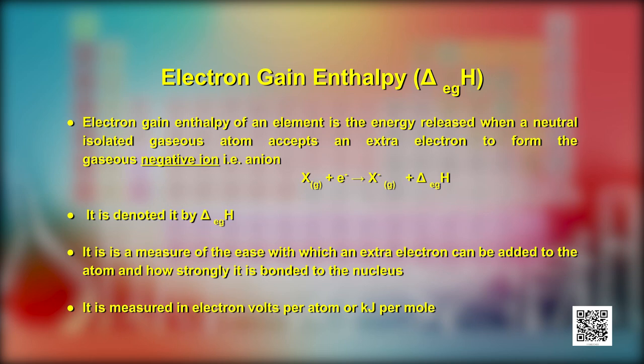We know that energy is required to remove the outermost electron from an atom because this electron is experiencing nuclear attraction. Similarly, if an electron is added to an atom, it will also experience attraction by the nucleus. When it experiences attraction, some energy is released. This is termed as electron gain enthalpy. It is defined as the energy released when an extra electron is added to a neutral isolated gaseous atom to form the gaseous negative ion. It is denoted by ΔegH.